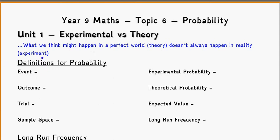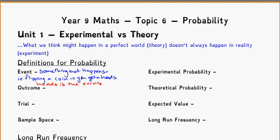First definition for us is just an event, and this is just something that happens. As an example, if you're flipping a coin, you get a heads. Heads is the event. So that's what happened. You got a head.